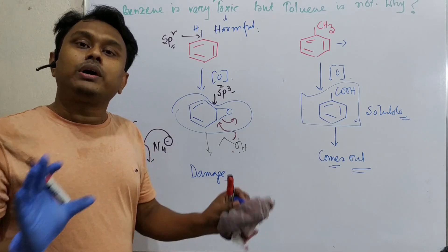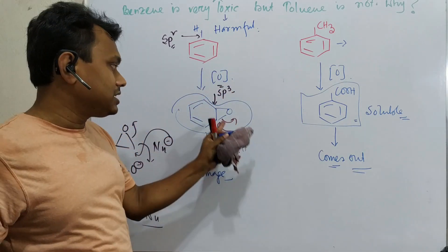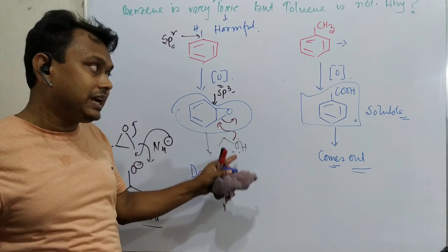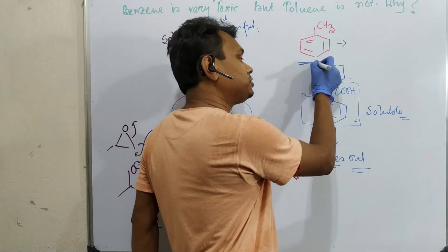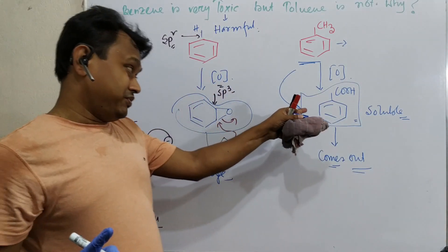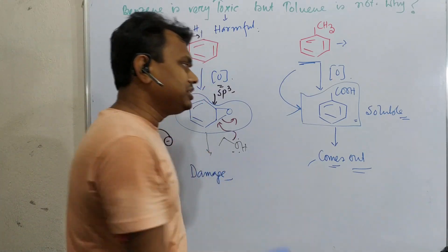In summary, benzene is toxic because after its oxidation it produces epoxide derivative which damages our enzyme due to nucleophilic attack. Whereas in case of toluene, it produces benzoic acid which is not a very toxic species, doesn't bind with anything, and comes out.